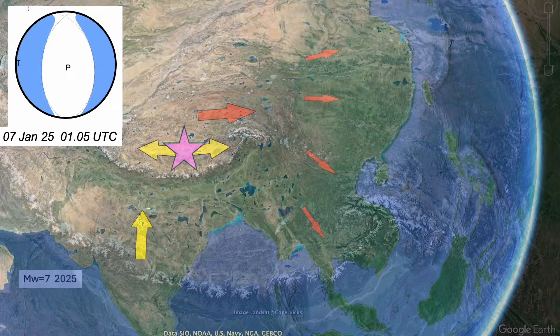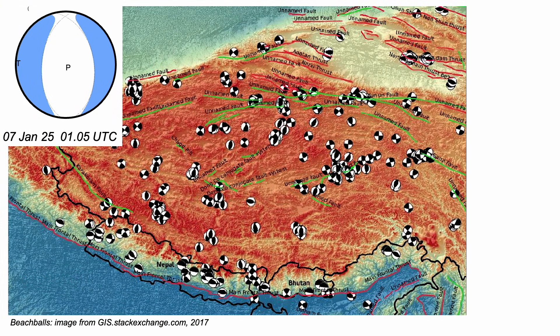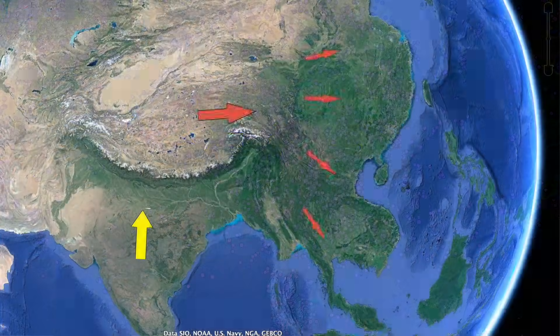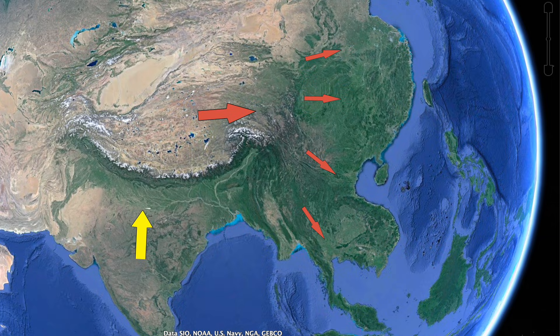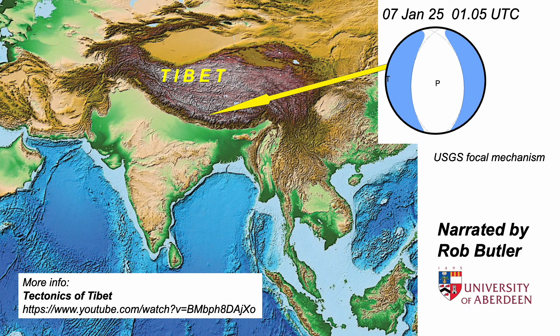And it's not been alone. There's been a whole series of these normal fault earthquakes across the Tibetan Plateau through time. So that's the context for the earthquake in southern Tibet in January 2025 — the Tibetan Plateau being extruded out sideways towards the east as India collides with Asia, remorselessly moving forward at around 4.5 centimetres a year. And we can expect this style of tectonics to continue.